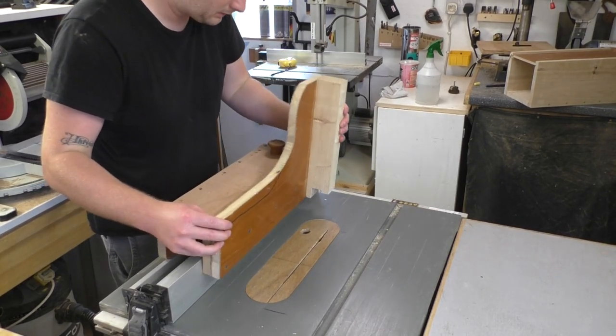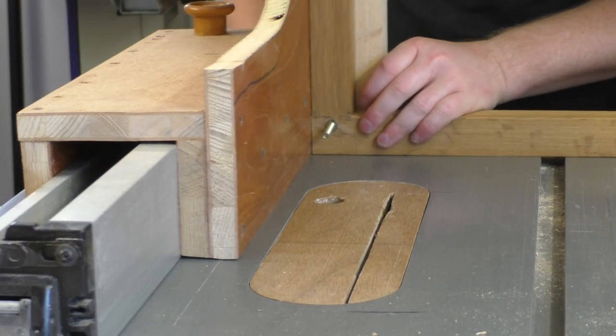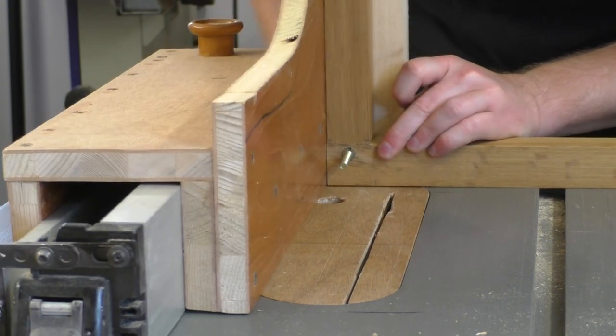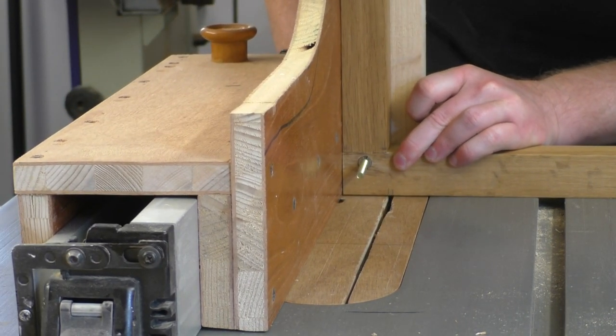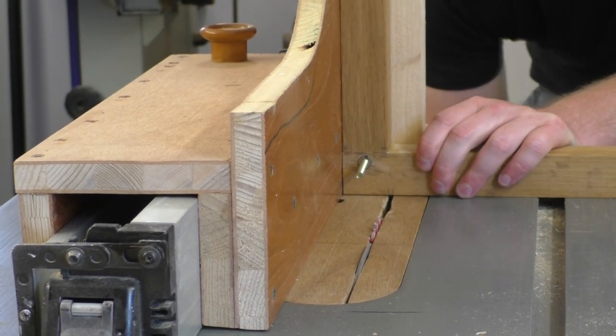I'd use my tenon jig on the table saw to cut the groove as the kerf of my blade is 3mm, which is the same thickness as the metal table top. So I could line up the blade with the pencil mark and then set the blade height to the depth I needed the slot to be, which was 4mm.